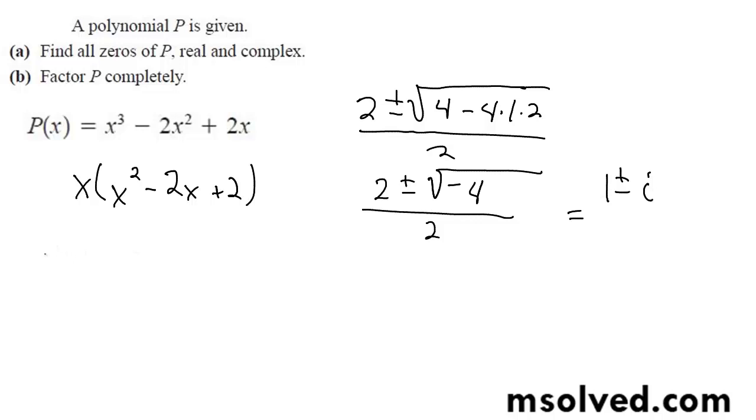So essentially our roots are going to be 0, 1 minus i, and 1 plus i.